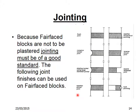Jointing. If you are going to be using finished block work that is not going to be plastered or rendered, it is called fair-faced work. Because fair-faced blocks are not to be plastered, jointing must be of a good standard. The following joint finishes can be used: a flush joint; an ironed or tooled joint done with your jointing bar; a shallow tool using a large diameter jointing bar; a weatherstruck; weatherstruck and cut pointing, which projects further from the block and has to be cut away; a reverse-struck joint, which slopes from the top down; the square recessed joint done with a raker; and tuck pointing.